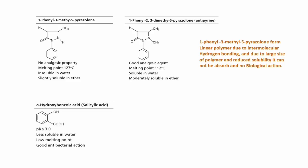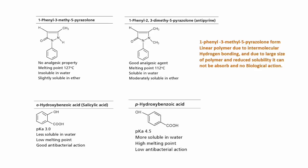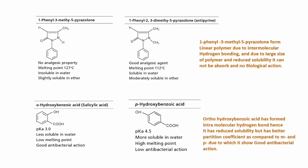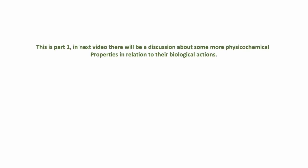दूसरा example है salicylic acid का। Salicylic acid की ortho form, para और meta form की तुलना में potent antibacterial action show करती है। Ortho form intramolecular hydrogen bonding बनाती है, जिससे इसकी water solubility तो कम हो जाती है लेकिन partition coefficient बढ़ जाता है — इसीलिए ये ज्यादा absorb होती है और ज्यादा biological action show करती है। These are some physical chemical properties जो drug के biological action को affect करते हैं। Next video में we will discuss about some more physical chemical properties in relation to biological activities. Thanks for watching.